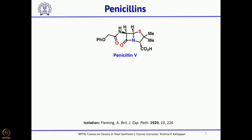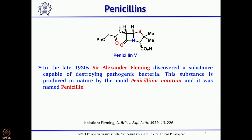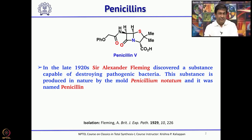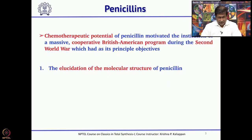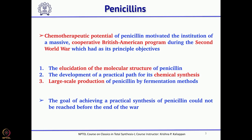Penicillin has a great history — it was discovered by Sir Alexander Fleming in 1920, and that was considered one of the greatest discoveries because during World War many people died. With the isolation of penicillin they could change the treatment for people who were seriously infected during the war. After seeing the potential of penicillin, the USA and UK came up with high-level targets, but they did not yet know the structure.